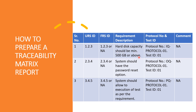For example, I have taken an installation qualification requirement which is mentioned in the URS. The requirement description is: hard disk capacity should be minimum 500 GB or above. Here you can provide the relevant protocol number on which we have tested or verified this description or step. Along with this, we need to provide the protocol number and test ID of that step. In the next column there is a comment, where you can write any discrepancy or resolution related to this step.